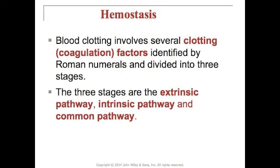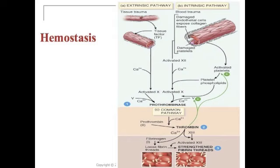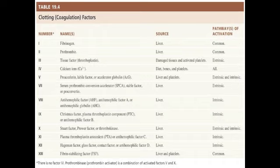Hemostasis or blood clotting involves several clotting factors identified by Roman numerals and divided into three stages: the extrinsic pathway, the intrinsic pathway, and the common pathway. Figure 19.11 on page 715 shows that in blood clotting, coagulation factors are activated in sequence, resulting in a cascade of reactions that includes positive feedback cycles. Table 19.4 on page 716 is a table of clotting factors that you can go through on your own time.